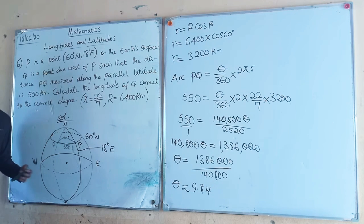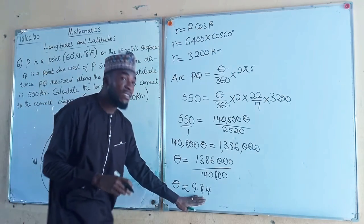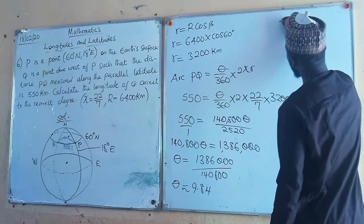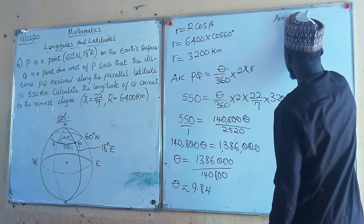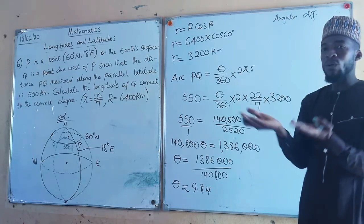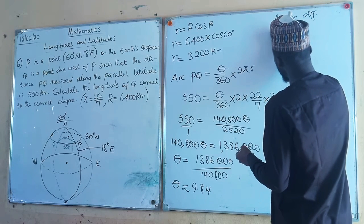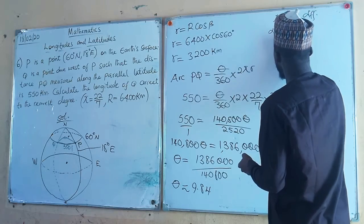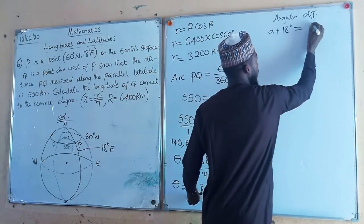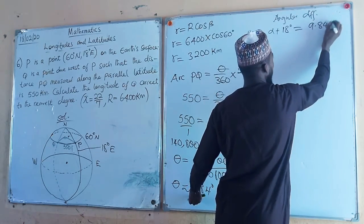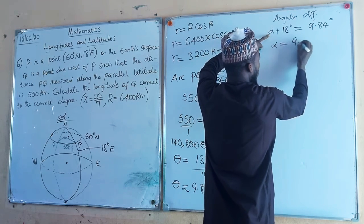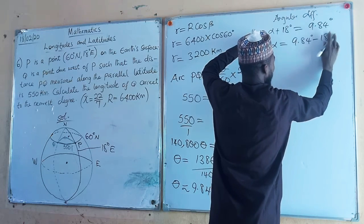The angular difference theta is 9.84 degrees. Now, we know that the longitude of P is 80 degrees east. So the unknown angle alpha, the angular difference, plus the longitude of P (80 degrees) gives us the total theta. Wait — the given longitude there is 80 degrees east, so: alpha + 80 = 9.84 degrees.